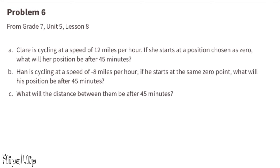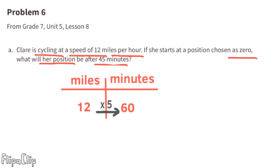Problem number 6 from 7th grade Unit 5 Lesson 8. Part A: Claire is cycling at 12 miles per hour. Starting at position zero, what will her position be after 45 minutes? We can make a chart with miles on the left and minutes on the right. She travels 12 miles per hour, and 60 is 5 times larger than 12 — so 12 times 5 equals 60.